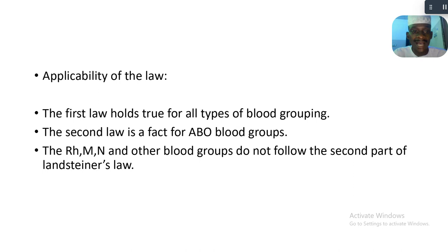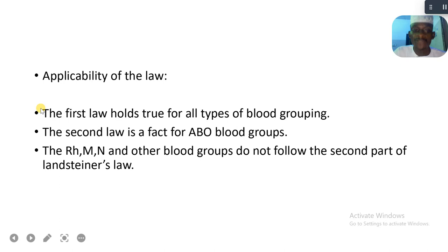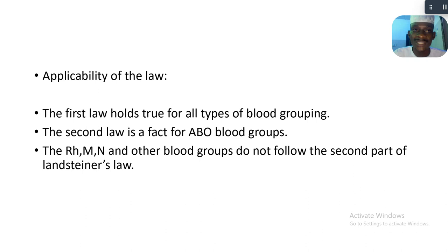What are the applications of Landsteiner's Laws? The first law holds true for all types of blood grouping — that is, if the antigen is present on the surface of the RBC, the antibody is absent in serum. However, the second law is applicable only to the ABO blood group system. The Rhesus factor and other blood groups do not follow the second part of Landsteiner's Law. In exams, they want you to understand the basis rather than go in depth.